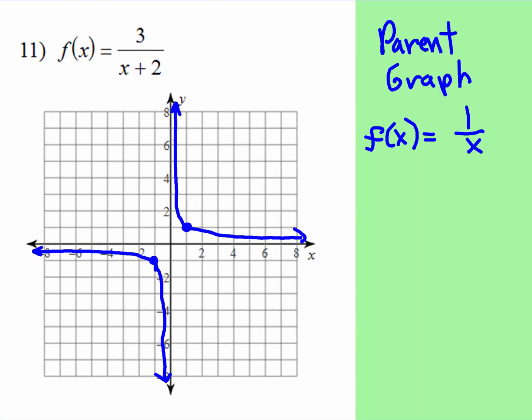Now I'm going to introduce a new parent graph that we haven't covered yet. This is the parent graph, sometimes called the inverse graph, or it's a form of a rational graph: f of x is equal to 1 over x.